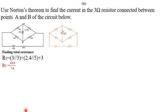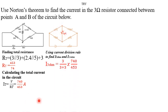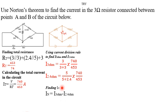After finding the total resistance, we find the total current by dividing the total voltage by the total resistance. We then find the current flowing through the relevant branch, apply KCL at the node, and use current division to find the current through the 3-ohm resistor and through the 2.4-ohm resistor. Finally, we find IN by subtracting the current through the 2.4-ohm resistor from the current through the 3-ohm resistor.